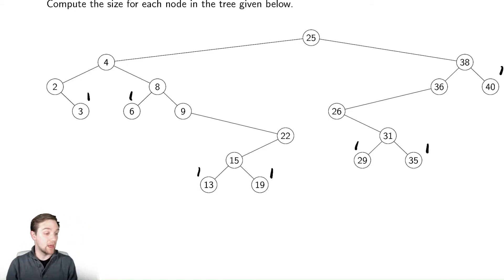Then for everything above them I just need to add up all of the nodes below. So for node 2, well, I have one leaf and myself, so node 2 has size 2.